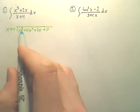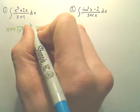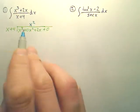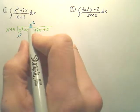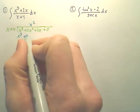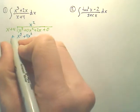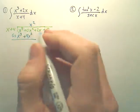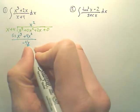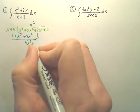So x times what gives you x to the third? It would be x squared. x squared times x gives you x to the third. x squared times 4 gives you 4x squared. And then we subtract down. That's gone. Negative 4x squared. Bring down the 2x.